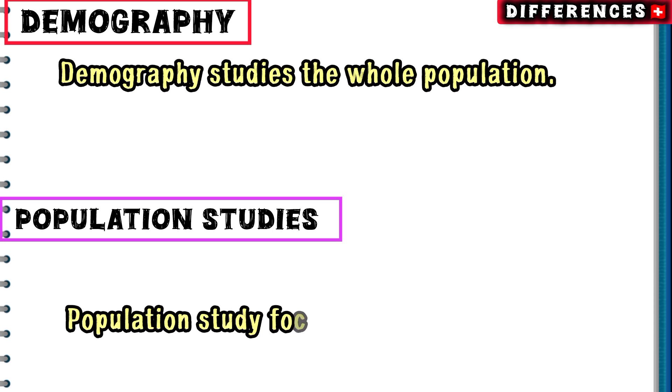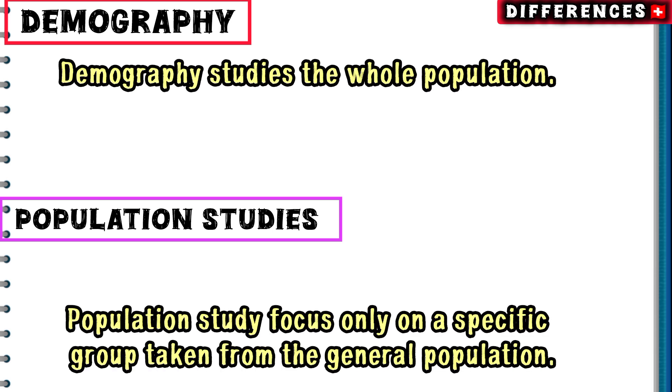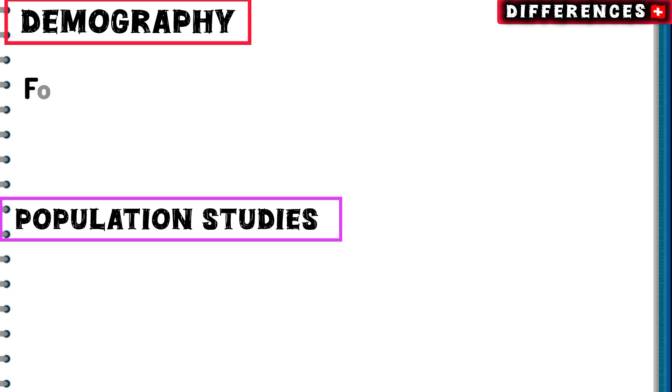Demography studies the whole population, while population study focuses only on a specific group taken from the general population.